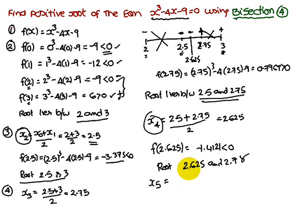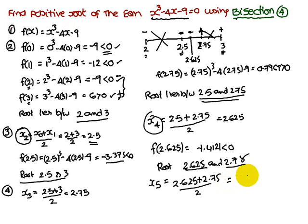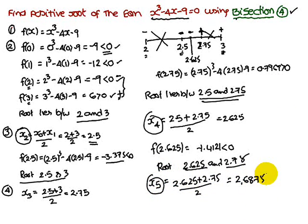Compute x₅ = (2.625 + 2.75) / 2 = 2.6875. The problem asks to complete up to four stages, so x₅ completes the process. Always remember: the root lies between two opposite signs — that is the main concept of the bisection method.